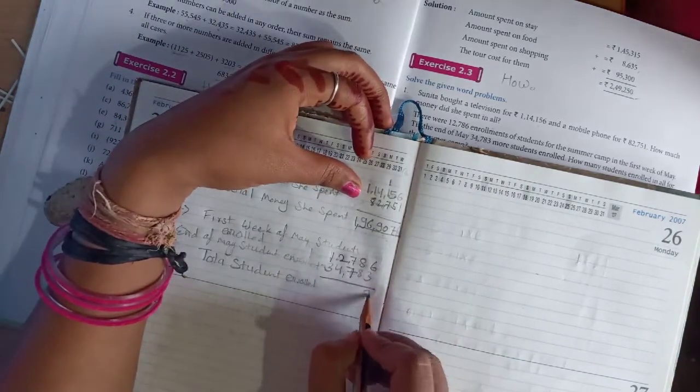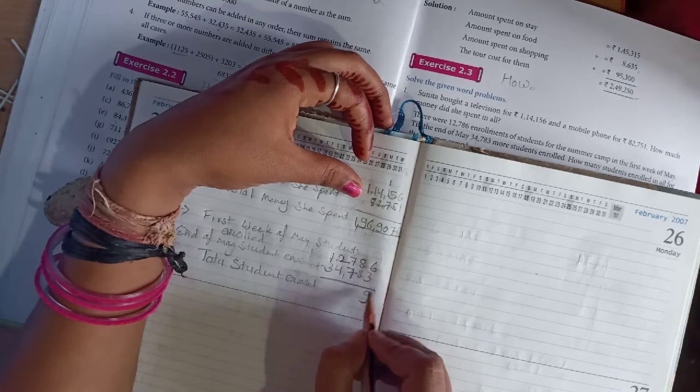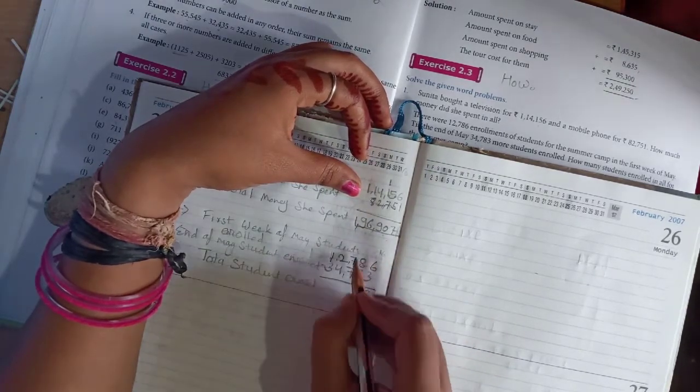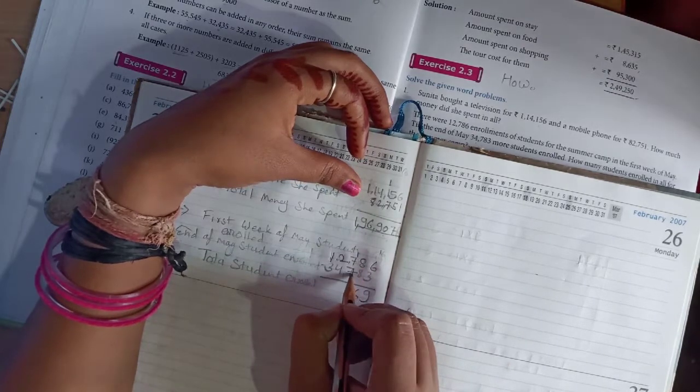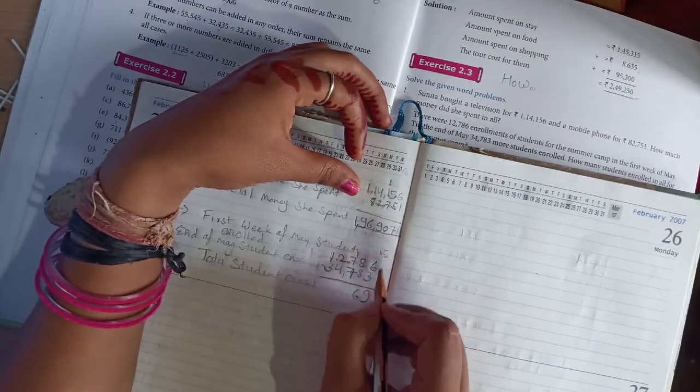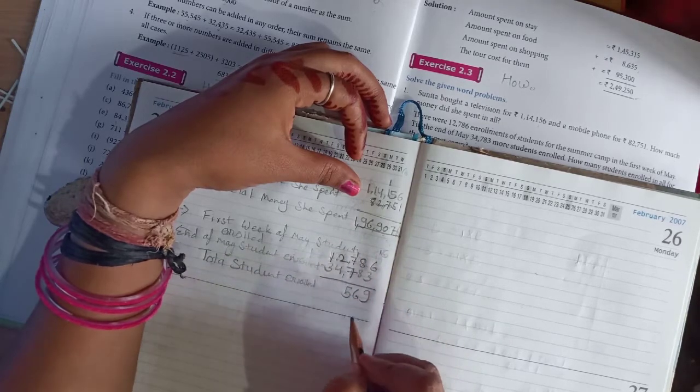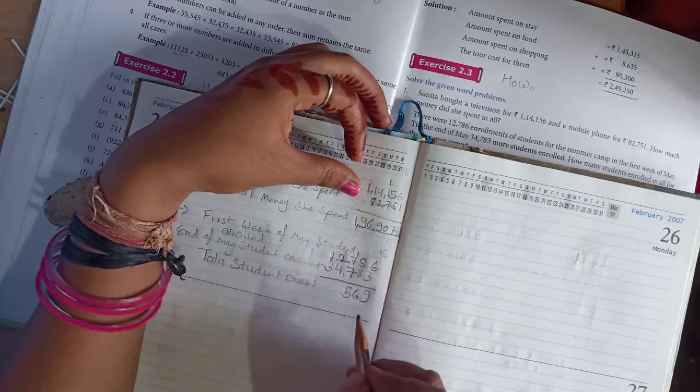6 plus 3 is 9. 8 plus 8 is 16, so 6 is written here. 1 is carry forwarded. 7 plus 7 is 14, plus 1 is 15. So 5 is here and 1 is carry forwarded.